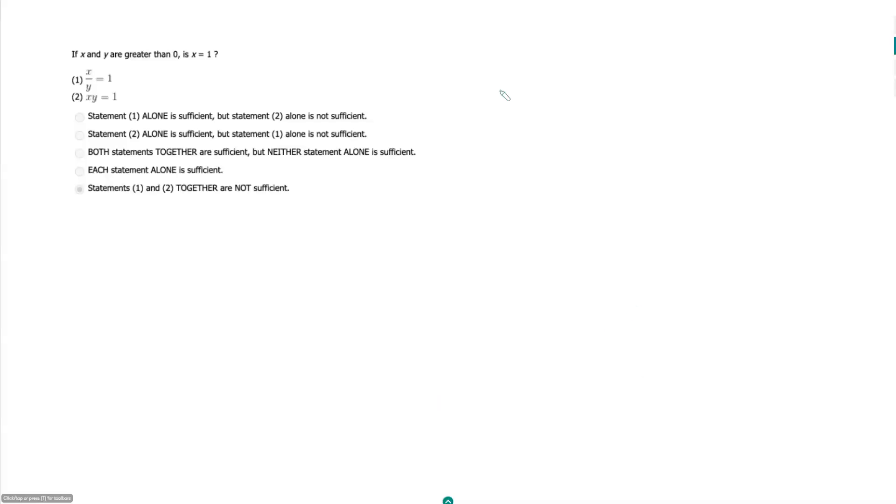If x and y are greater than 0, is x equal to 1? So if we are trying to prove insufficiency here, we want to come up with at least two possible values for x where one of them is 1 and one of them is anything else.